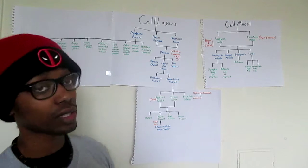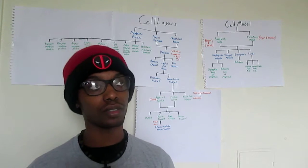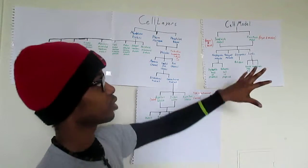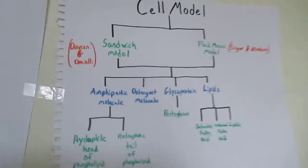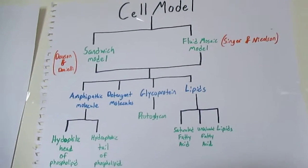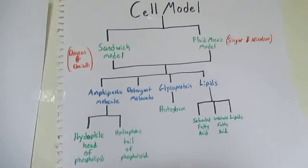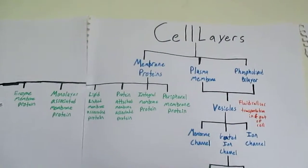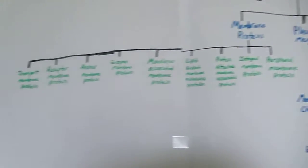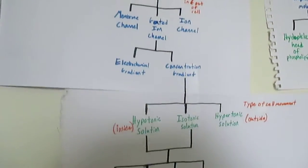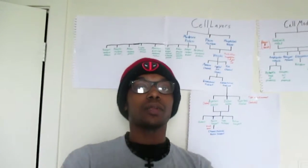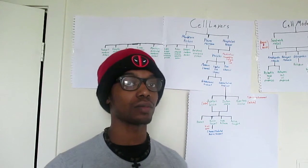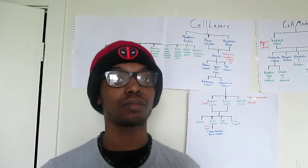That's all that we have for the cell model and the cell layers of the cell membrane. I'm going to give you a better view by showing you. This is the cell model and all of its parts, and this is the cell layer and all of its membrane, proteins, and solutions that it breaks down into. My name is Anthony Williams and that's the end of our presentation, so have a nice day.